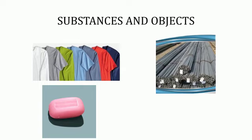It means that we consider the properties of substances to use them for making things. If you want to make a particular object, you should first consider the properties of the substances you will need. The same substance or material can be used to make many objects. For example, from cotton you can make cloth, fiber, thread, a sari, a handkerchief, a quilt, mattresses, or a pillow.